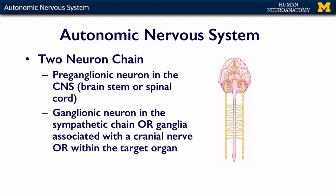The autonomic nervous system is a two-neuron chain. When we talked about somatic motor systems, we talked about an alpha motor neuron in the spinal cord that went out and innervated a skeletal muscle in the periphery — it was one neuron with one axon that went to the muscle.